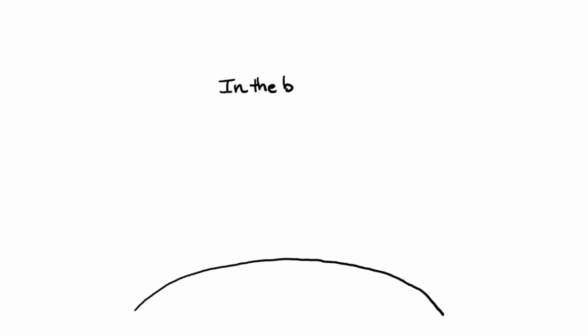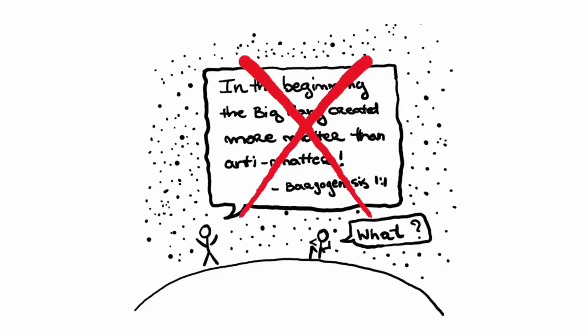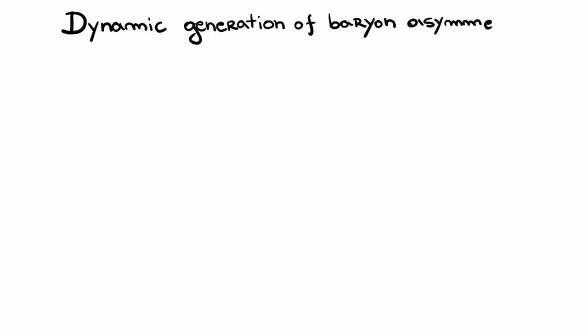One might think that there was some primordial accidental matter-antimatter imbalance right after the Big Bang, but the inflationary scenario of the universe eliminates that possibility. On the other hand, how do we account for a dynamic generation of the asymmetry? This kind of scenario goes by the name of bariogenesis.